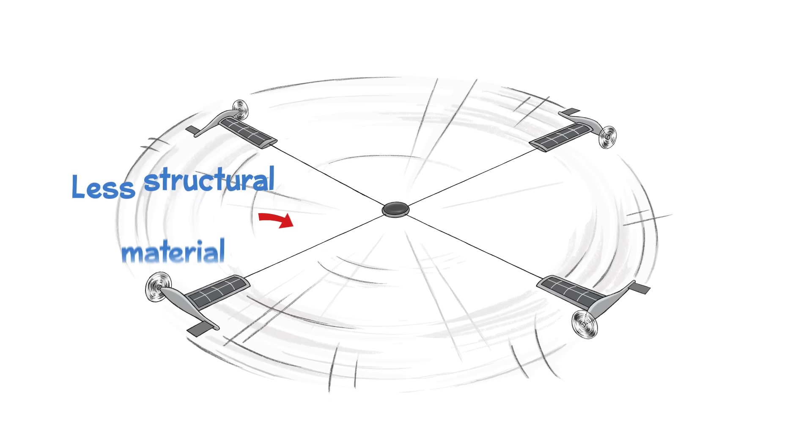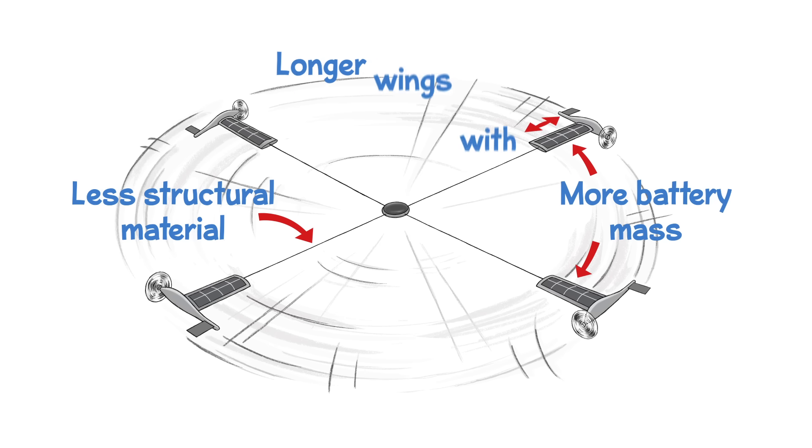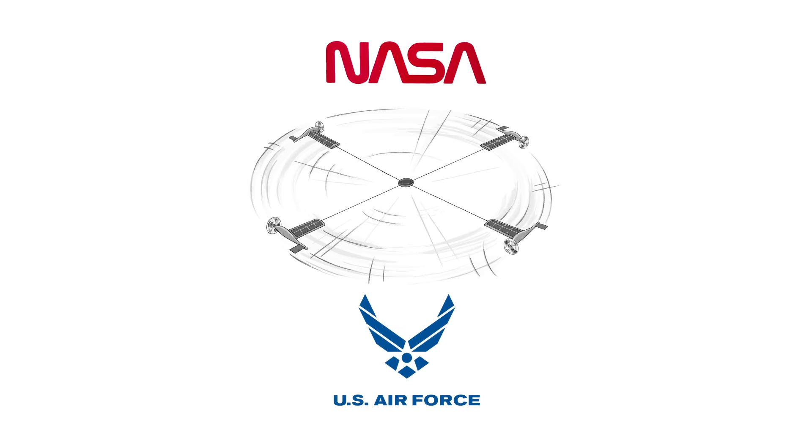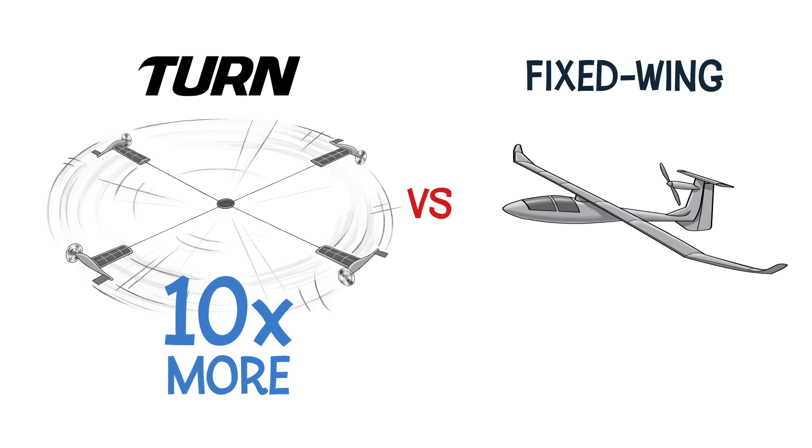That means less structural material, more battery mass, and longer wings with thin airfoils, all while maintaining a stationary payload. NASA and Air Force funding show that TURN is ten times more aerodynamically efficient than fixed wing, so persistent flight is within reach.